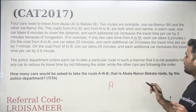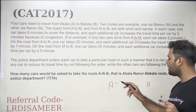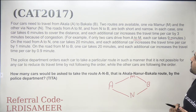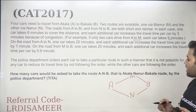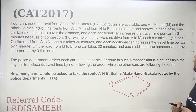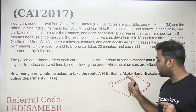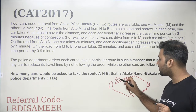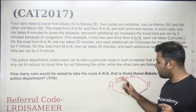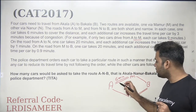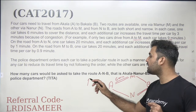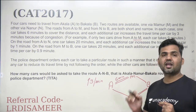The cars are traveling from city A to city B, and there are two routes available — one via M and one via N. The routes from A to M and N to B are both short and narrow. If a car is traveling from A to M it will take six minutes, but each additional car increases the travel time per car by three minutes.